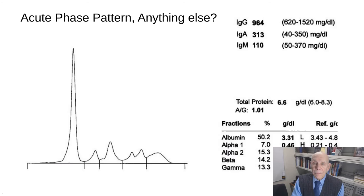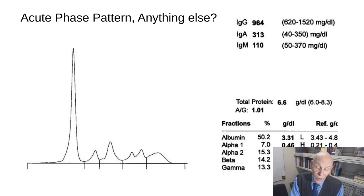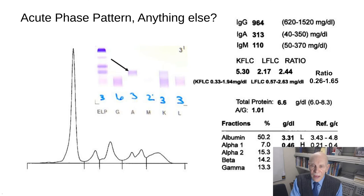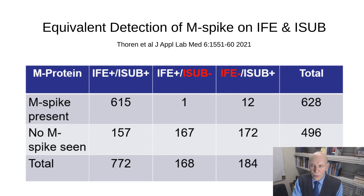Here's a case: the serum looks like an acute phase pattern — albumin is low, alpha-1 and alpha-2 are high, transferrin is a bit low relative to C3. But it's not just acute phase. There's an abnormal free light chain ratio, which prompted immunofixation. The immunofixation reveals a band in IgA and in kappa — an IgA kappa monoclonal protein that would have been missed without the serum free light chain test. This is exactly what Dr. Dispenzieri recommends.